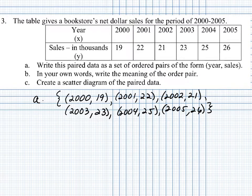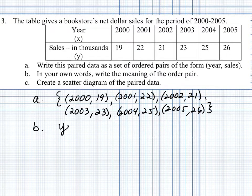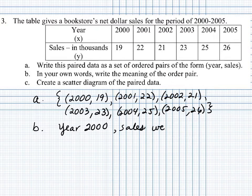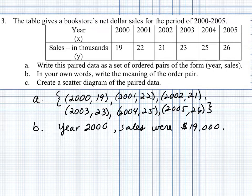In part B, in your own words, write the meaning of an ordered pair. For example, the first ordered pair means that in the year 2000, sales were 19 — in thousands of dollars, that's $19,000 in sales. You can continue interpreting the rest of the ordered pairs in the same way.